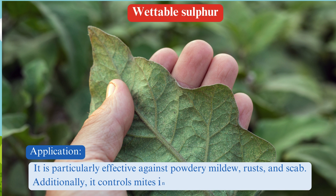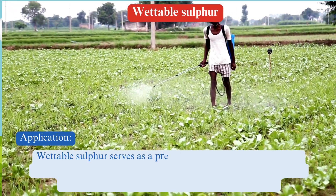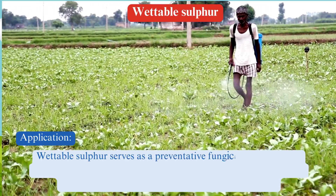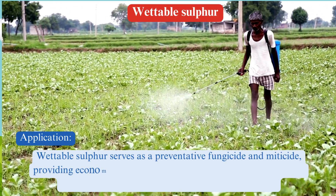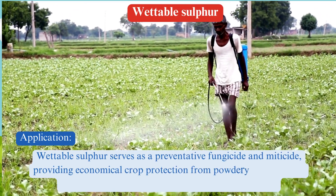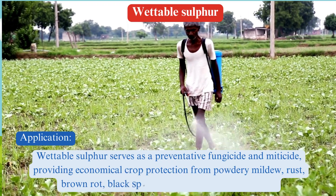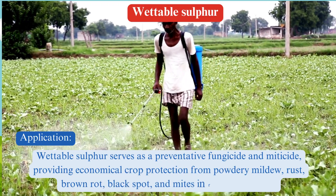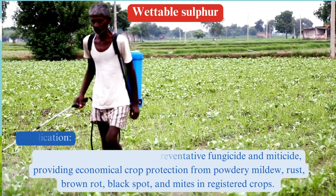Additionally, it controls mites in citrus, grapevines, and vegetables. Wettable sulfur serves as a preventative fungicide and miticide, providing economical crop protection from powdery mildew, rust, brown rot, black spot, and mites in registered crops.